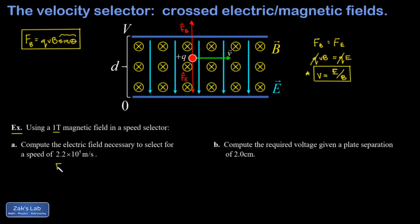I can write that E is equal to V times B. That's 2.2 times 10 to the fifth times one Tesla. And I end up with an electric field magnitude of 2.2 times 10 to the fifth newtons per coulomb or volts per meter.